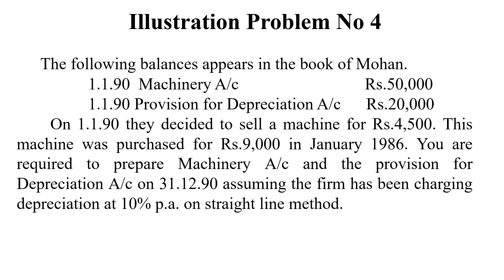In the problem, on 1-1-1990, the balance of the machinery account is 50,000 rupees, and the balance of the provision for depreciation account is 20,000 rupees. On 1-1-1990, they decided to sell a machine for Rs. 4,500. This machine was purchased for Rs. 9,000 in January 1986.